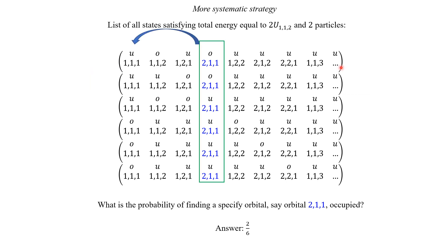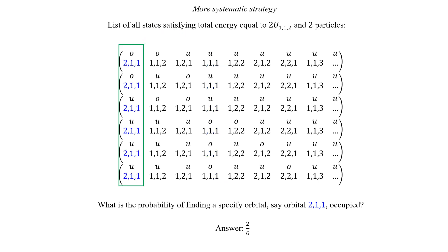Now we make a second modification of the way we are labeling the list. We're going to take the orbital of interest and move it to the first column. This is only a rearrangement of the way we are labeling — there is no physics in this. We're just moving the orbital of interest to the first position to make the visualization easier. I just swapped the position of orbital 111 with the orbital of interest. So here we still have the same list, organized so that the orbital of interest is in the first slot and all states with it occupied are on top.